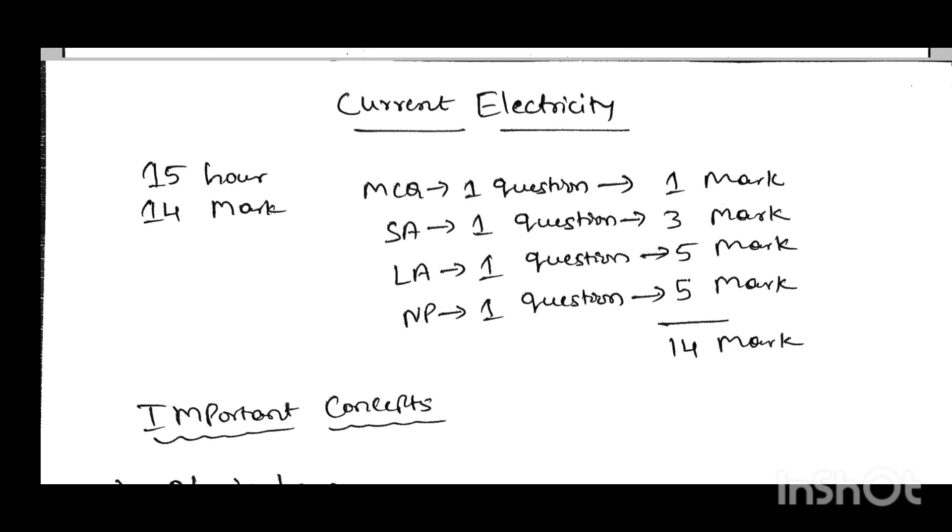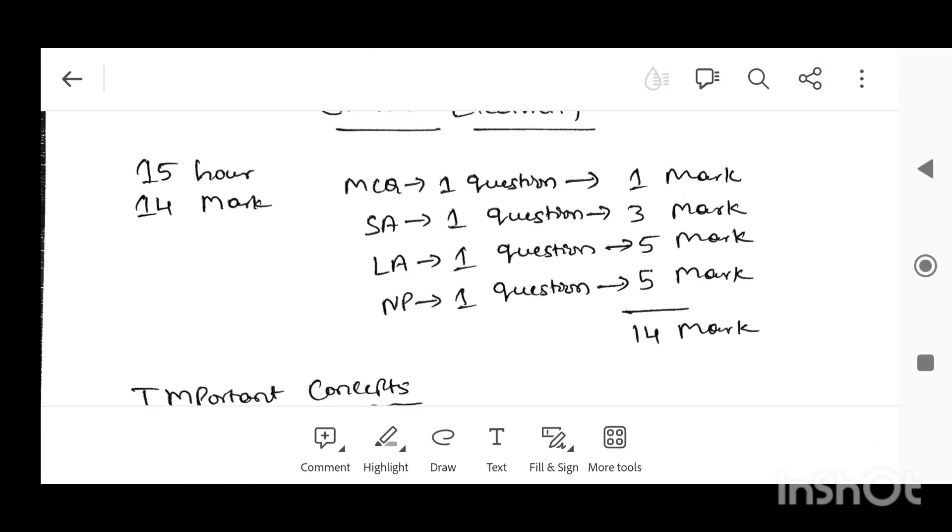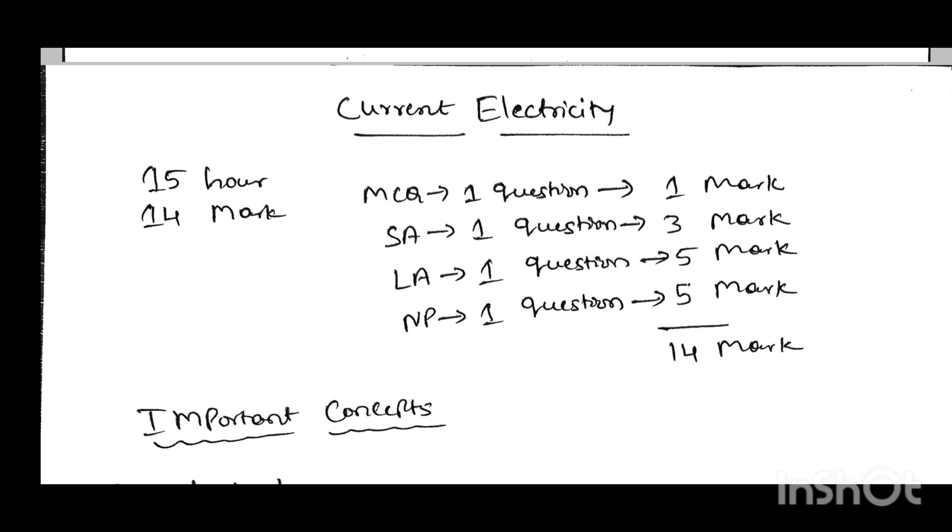This 14 marks is distributed in several sections. This is one of the chapters, only one chapter in which you are getting two 5 mark questions. One is from derivation section, long answer. Another one is numerical problems. MCQ one question, SA type question 3 marks, and long answer - one derivation and one problem. Totally 14 marks.